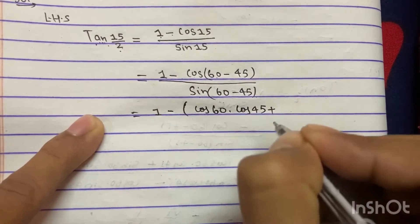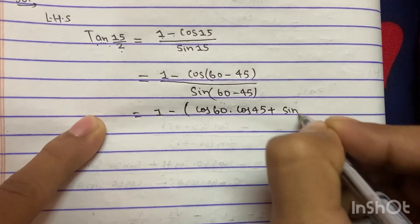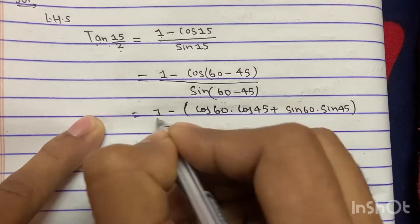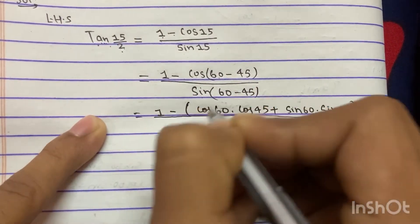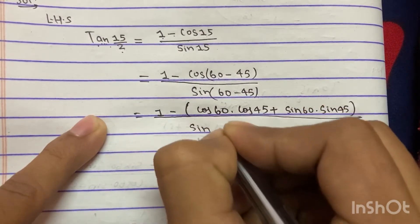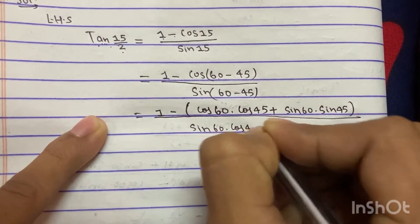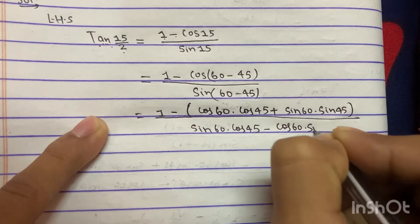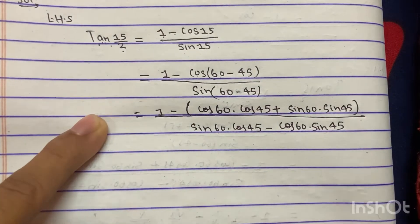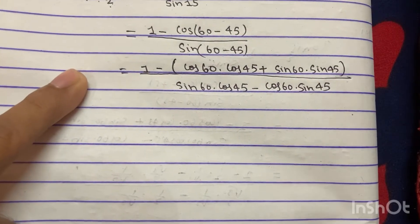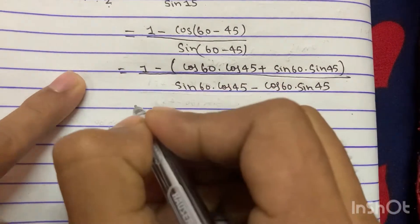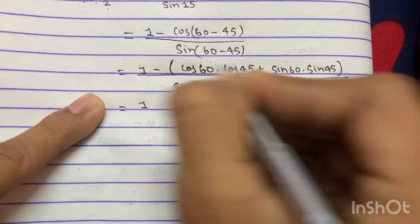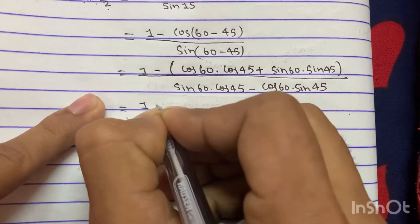Similarly, the formula for sin(A minus B) is sin A cos B minus cos A sin B. Now we have applied both formulas. Next, we put in the standard values for 60 and 45 degrees, and multiply out by opening the bracket with the minus sign.